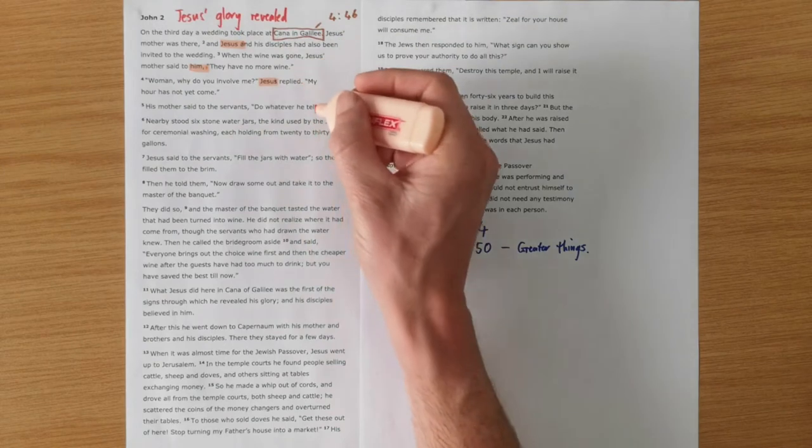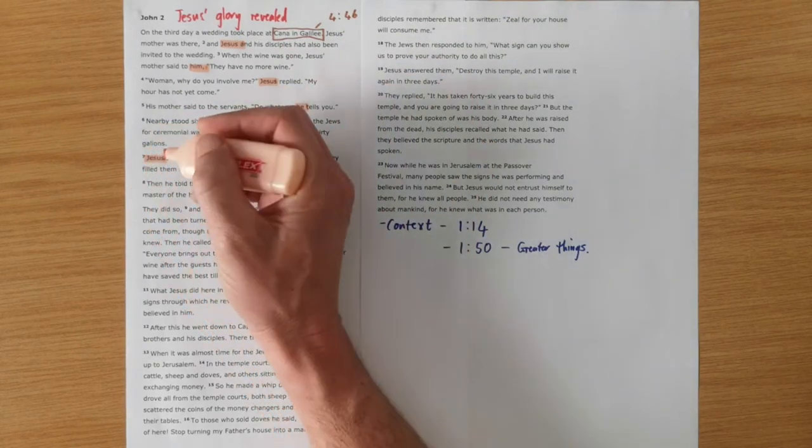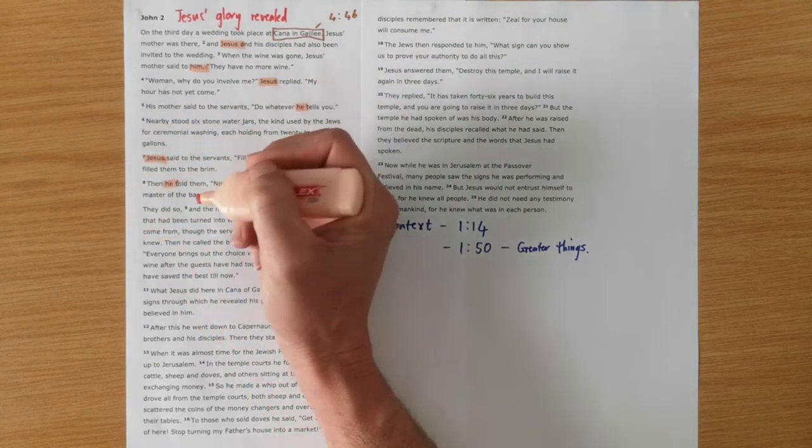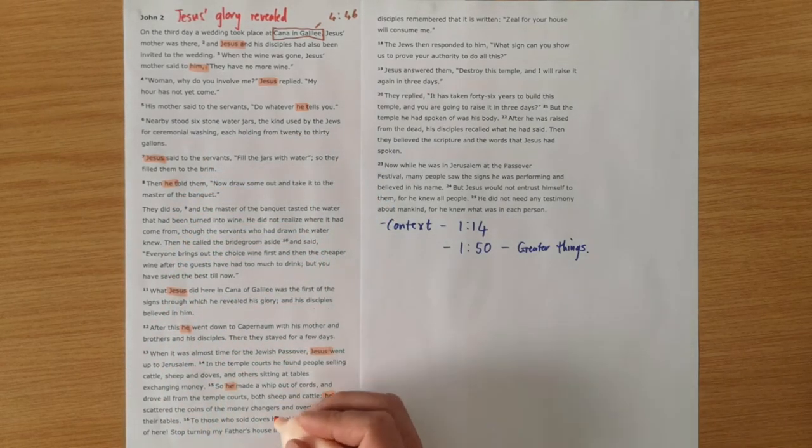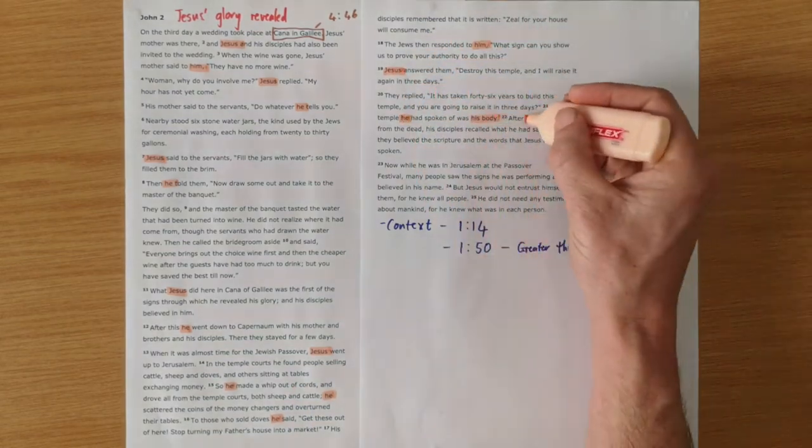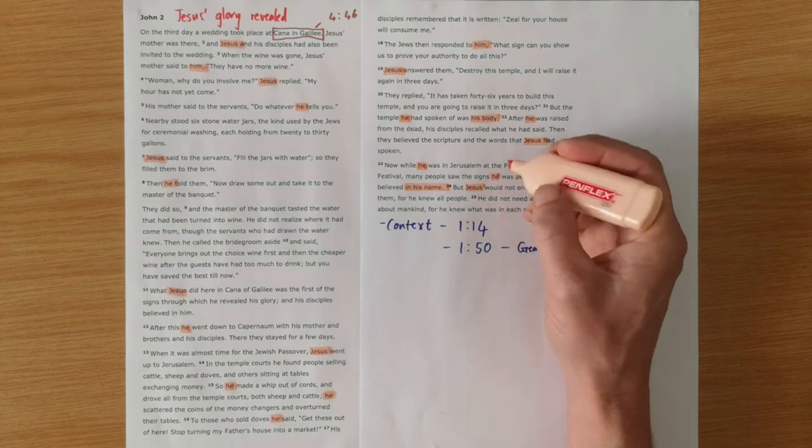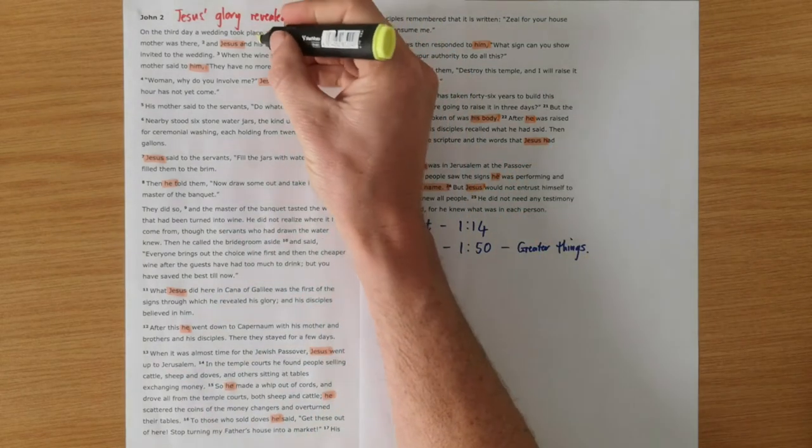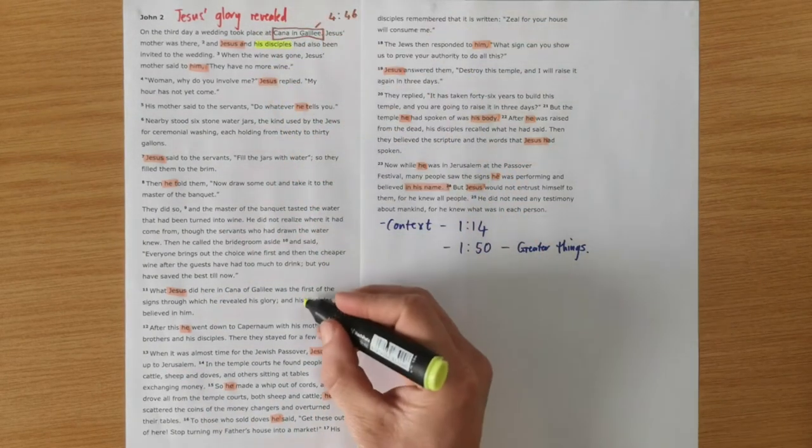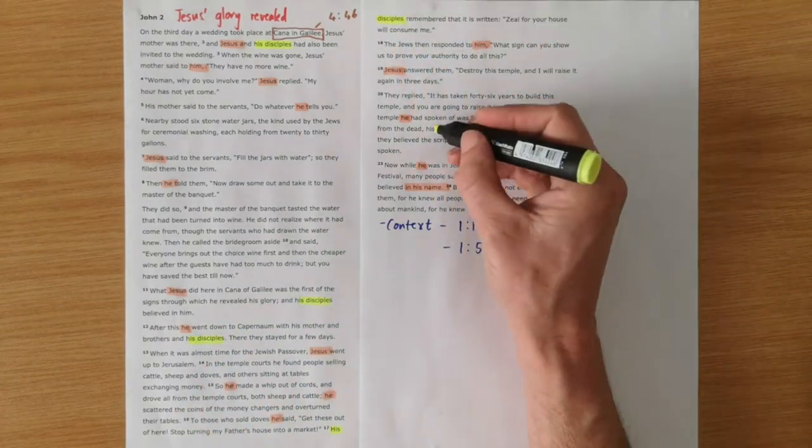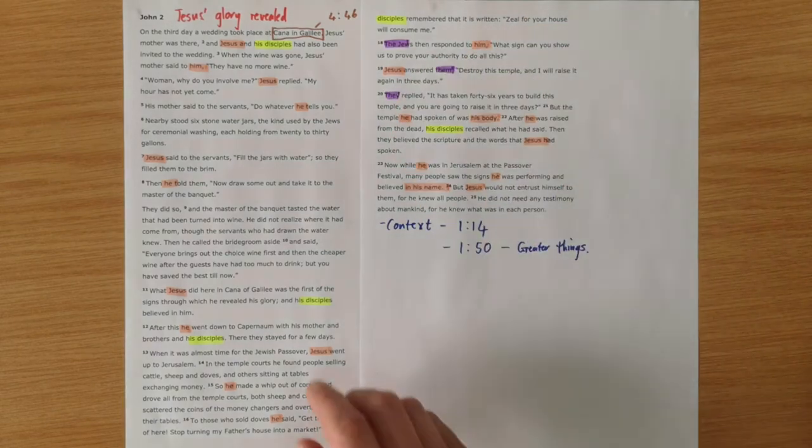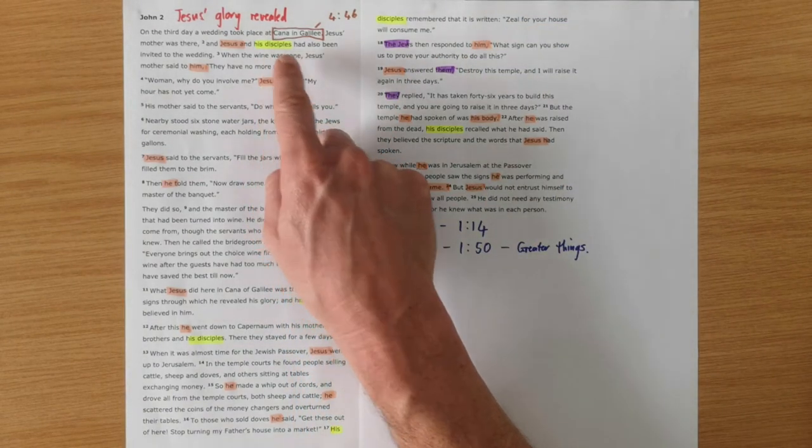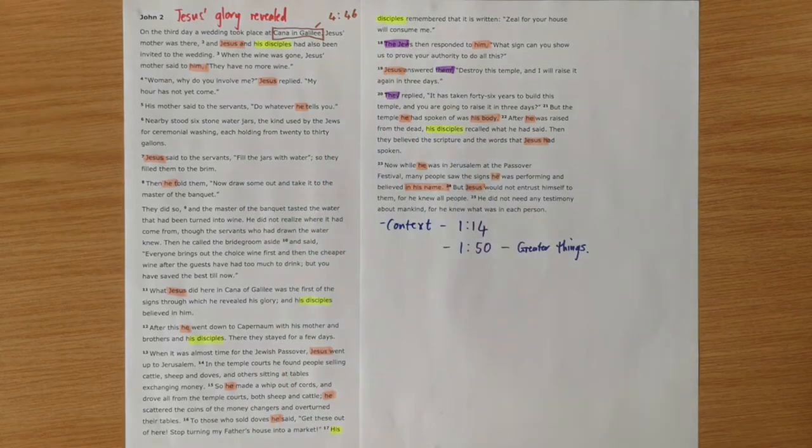Jesus is the key character to note in this section. So it's often worth just going through and highlight all the sections where we're told that Jesus is doing or saying specific things. Another set of characters worth highlighting are His disciples and then the Jews. So the disciples are those who we'll see respond rightly to Jesus and the Jews generally in John's Gospel respond negatively to Jesus.